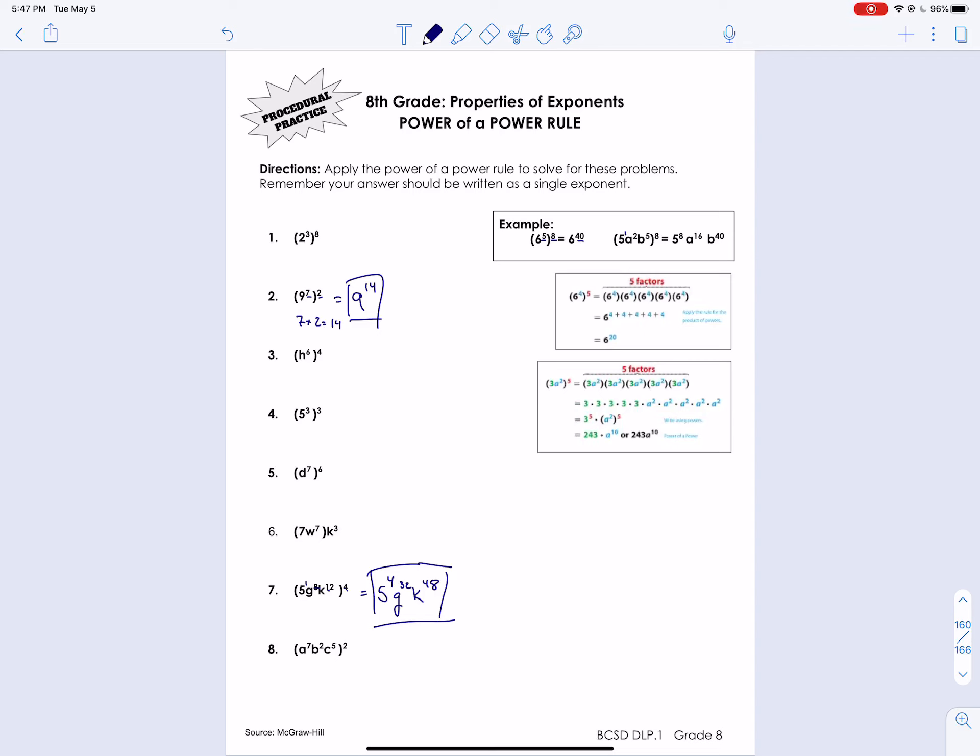Number 6. So that looks interesting. I believe that's a typo. It probably should have been 7w to the 7th K. And then outside would be that exponent of 3, perhaps. But it's not. So we'll evaluate it as it is. So it's just a multiplication. There's no exponent by itself like this outside of the parentheses. So it's just a multiplication problem. So this would be 7w to the 7th K to the 3rd. It's just multiplying. We're just rewriting it without the parentheses. And that's it. Again, that's definitely a typo because it doesn't fit with any of these other problems. So we'll take it as it is because I'm not sure of the intent of that question. So that'll be good enough.